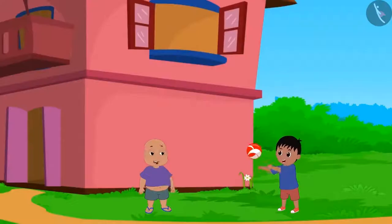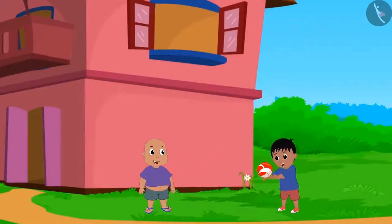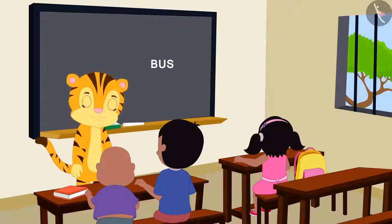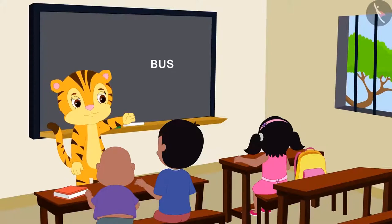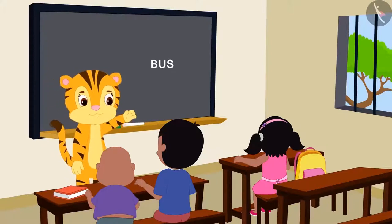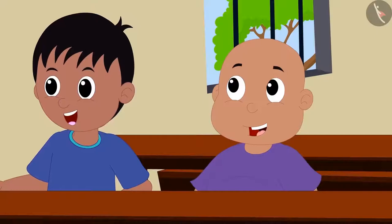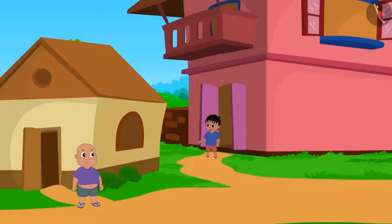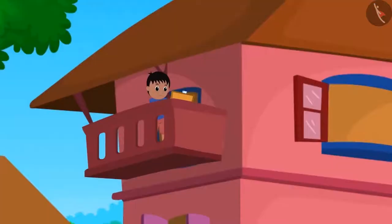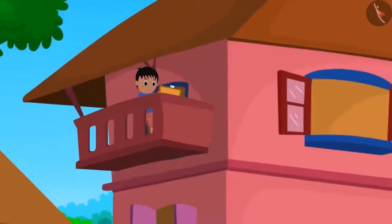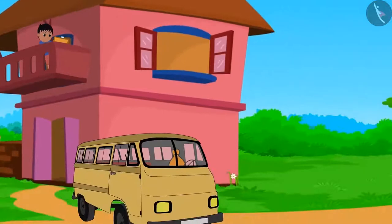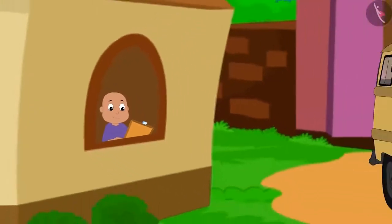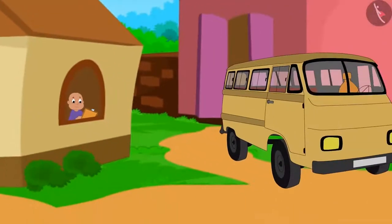Raju and Bablu are best friends. In the classroom, their teacher Mrs. Khanna asked them to draw a picture of a bus as homework. Both of them went home, looked out from the windows of their house, and began to draw the picture of a bus parked in their lane.